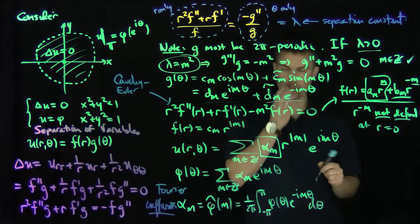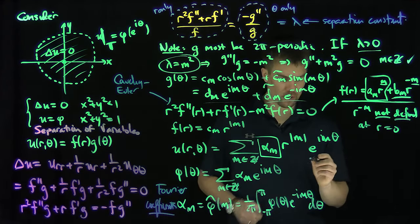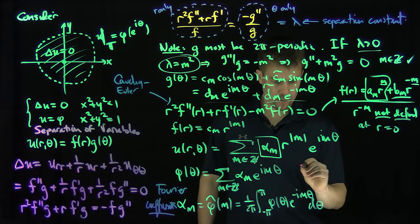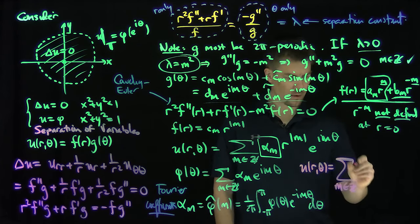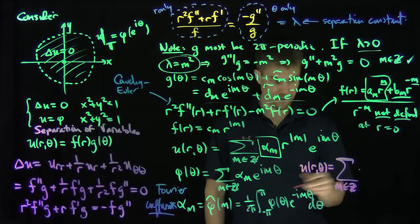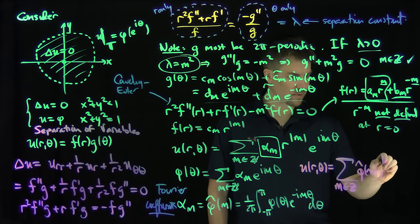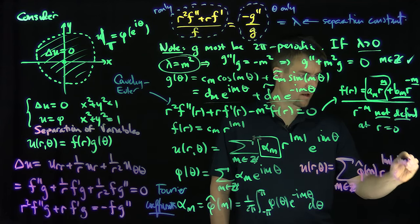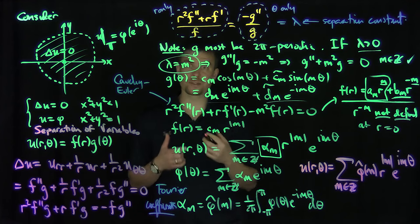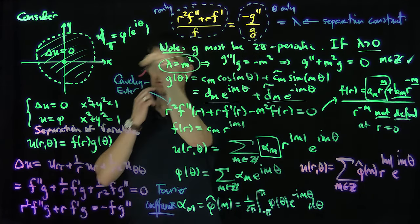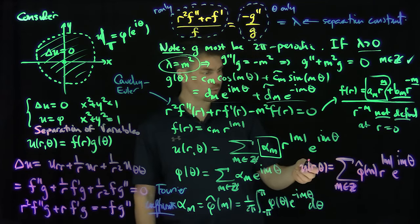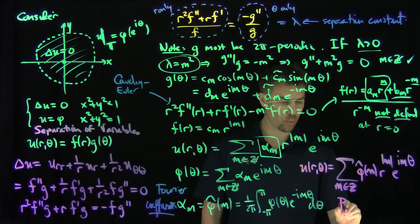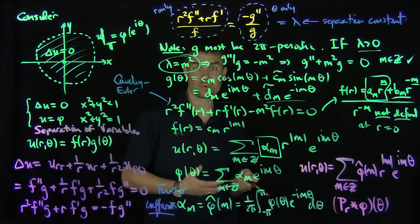Therefore the solution is u(r, θ) = Σ_{m ∈ ℤ} φ̂(m) r^{|m|} e^{imθ}, which is exactly the function φ convolved with the Poisson kernel — the Poisson kernel convolution of φ evaluated at θ. That is the solution to our Laplace equation on the unit disk with the given Dirichlet boundary condition.